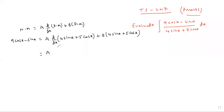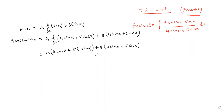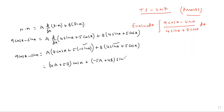Now differentiate the denominator. a into d/dx of 4sinx plus 5cosx gives: 4a·cosx minus 5a·sinx plus b into (4sinx plus 5cosx). Taking cosx common gives (4a plus 5b)cosx, and taking sinx common gives (minus 5a plus 4b)sinx. This equals 9cosx minus sinx.